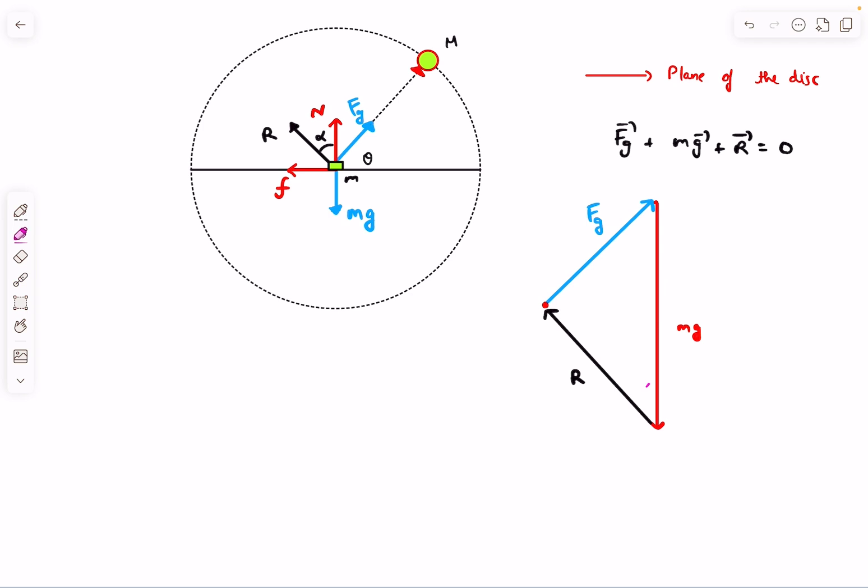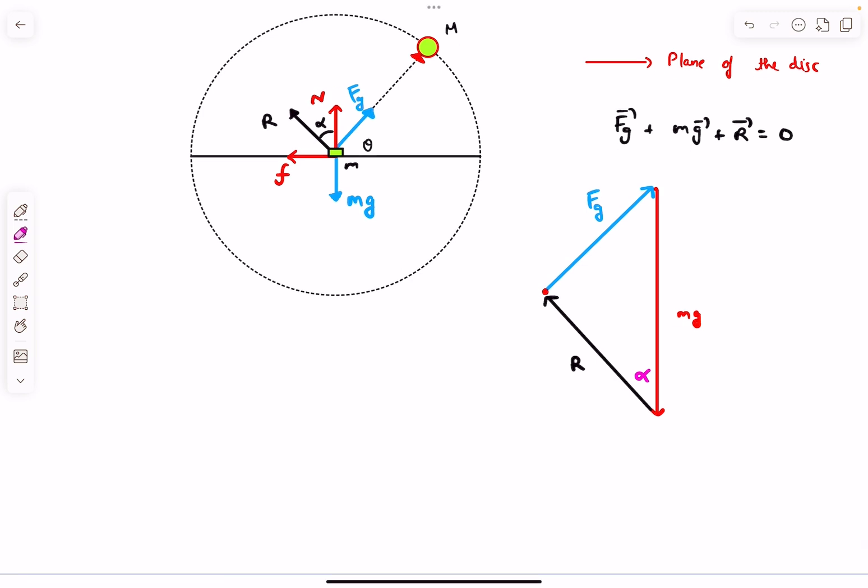R vector makes angle alpha with the vertical, Fg vector makes angle theta with the horizontal. Before marking angle theta, we can note something interesting. If you calculate the value of tan alpha, which is the angle R makes with direction N, then tan alpha is F divided by N.